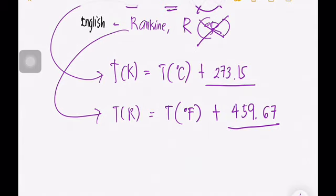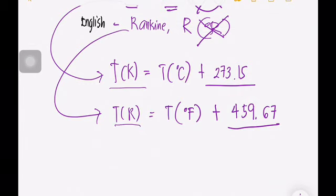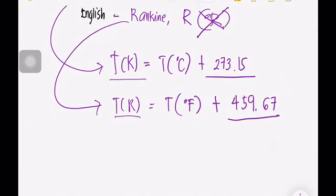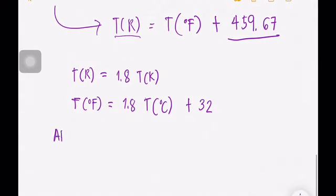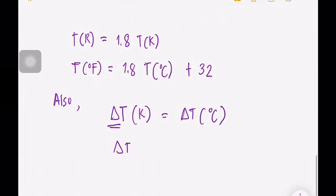In thermodynamics, we always use absolute temperature — the Kelvin scale and the Rankine scale. These two unit systems are also related: the temperature in Rankine equals 1.8 times the temperature in Kelvin. Also, the temperature in degrees Fahrenheit equals 1.8 times the temperature in Celsius plus 32. Note that the change in temperature in Kelvin equals the change in Celsius, and the change in Rankine equals the change in Fahrenheit.